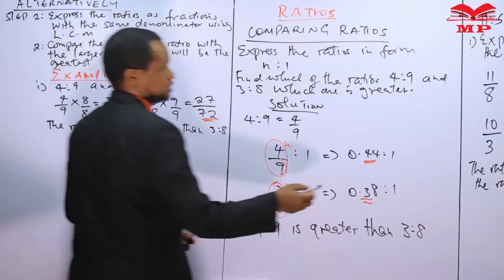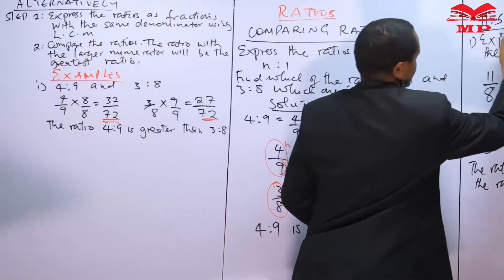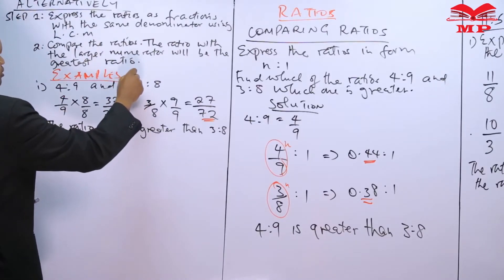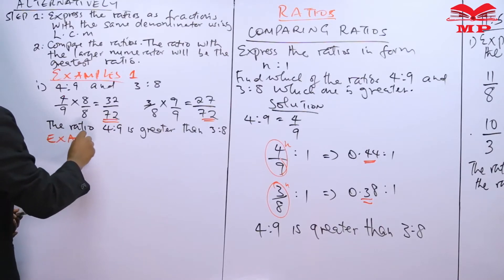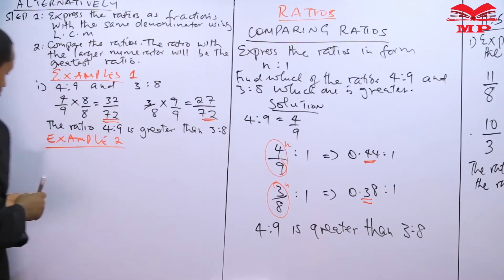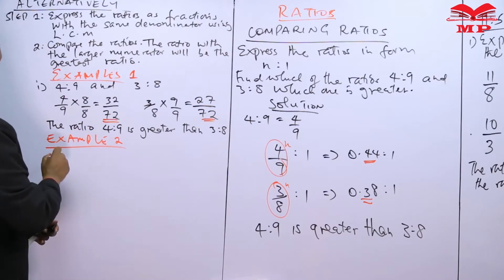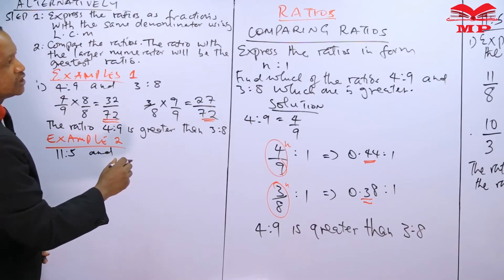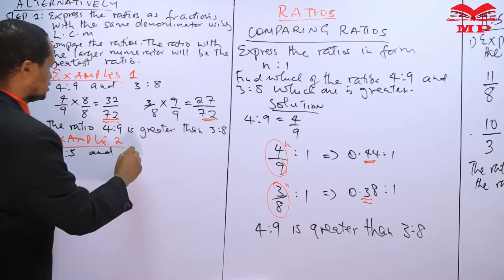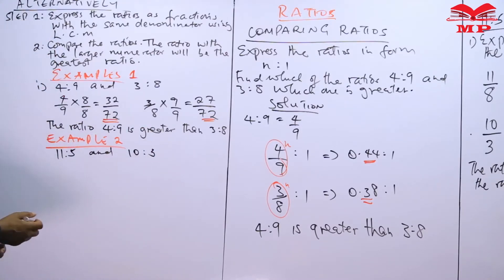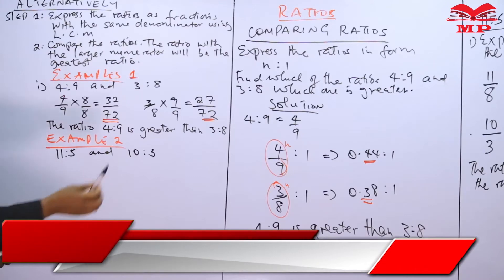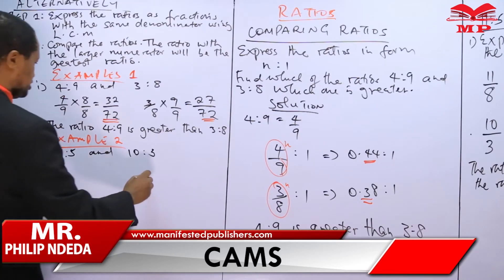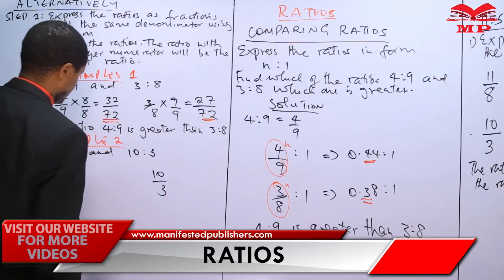You can also work out example two using this alternative method. Example two: we are comparing the ratio eleven to five and the ratio ten to three. Step one — express the ratios as fractions with the same denominator. We have eleven over five and ten over three.